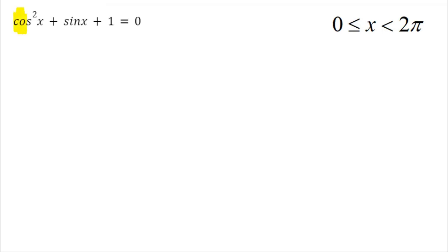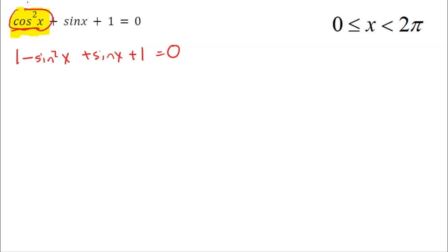This is where our identities are going to come in handy. I'm going to rewrite cosine squared in terms of sine. The Pythagorean identity is cosine squared of θ plus sine squared of θ equals 1, so I can replace cosine squared with 1 minus sine squared of x, giving us 1 minus sine squared of x plus sine of x plus 1 equals 0. All I made was a replacement — I replaced the cosine squared with 1 minus sine squared from that Pythagorean identity. Now I'm going to get everything on the other side, because it's usually a little bit easier with that square being positive. I'll add the sine squared over and subtract the sine over, and this 1 and that 1 make a 2, so I subtract it over to get a negative 2.